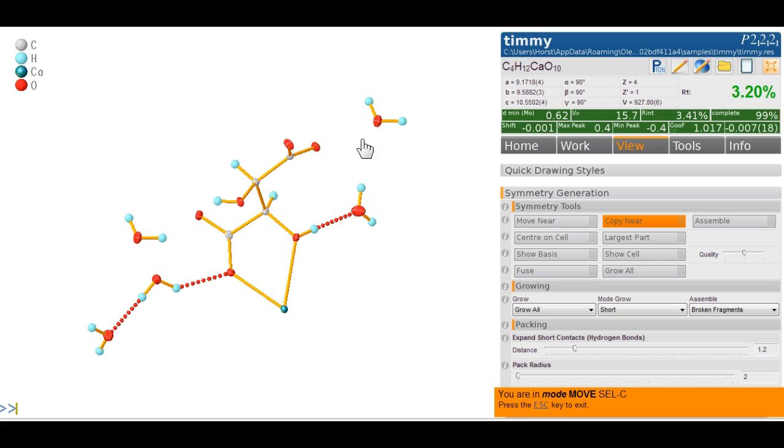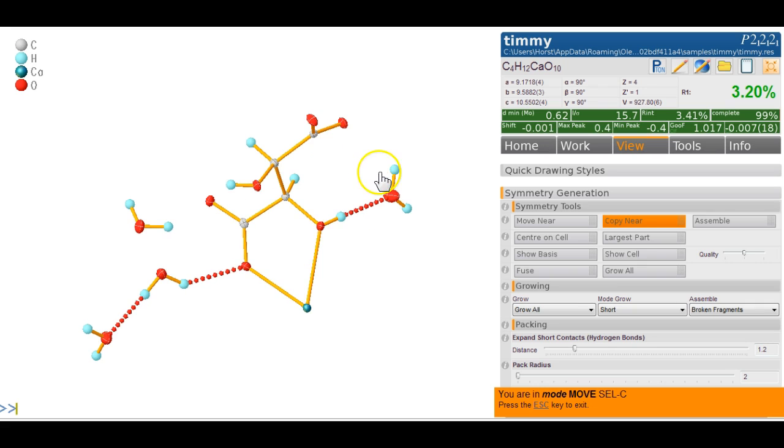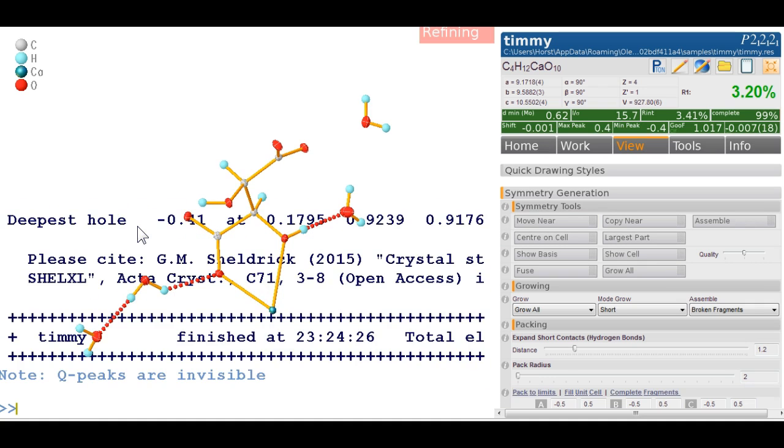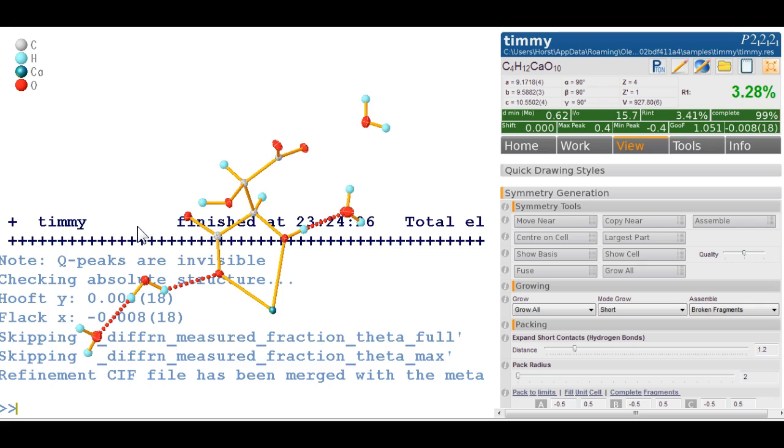If you then refine, this is where the molecule would stay. We go fuse because now we've got symmetry equivalents. I do this again with move near—escape first, click on this, move near, and we do this. We now have moved it over. If I click refine or type Control R, this is where it's now going to be.